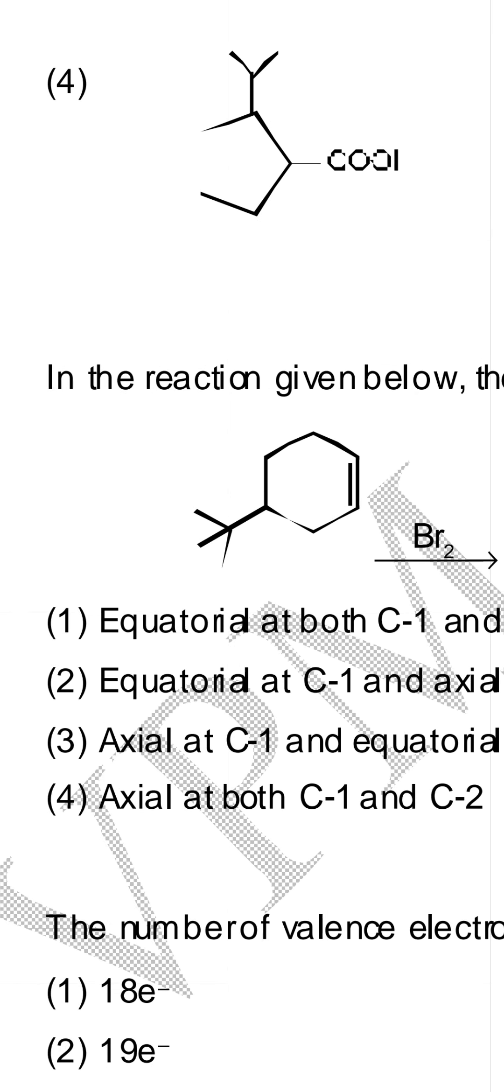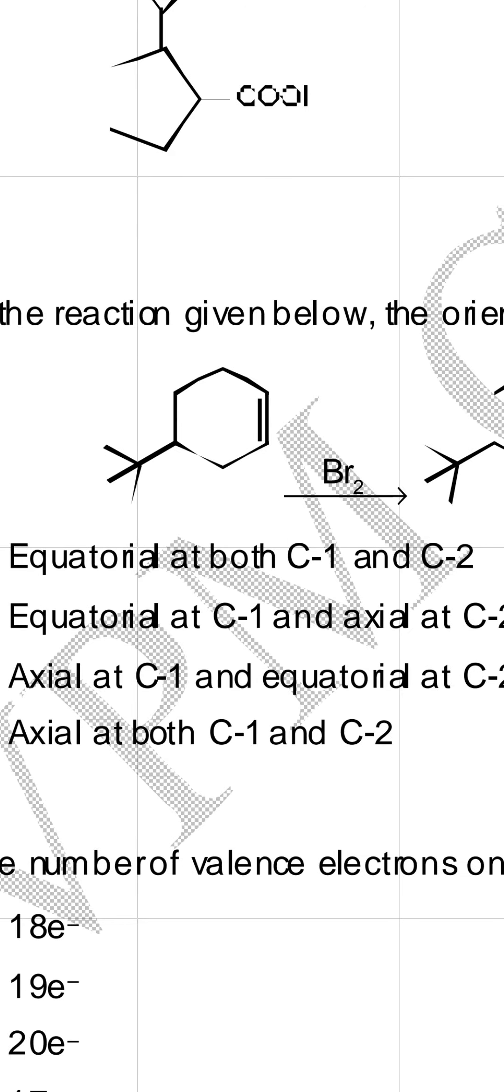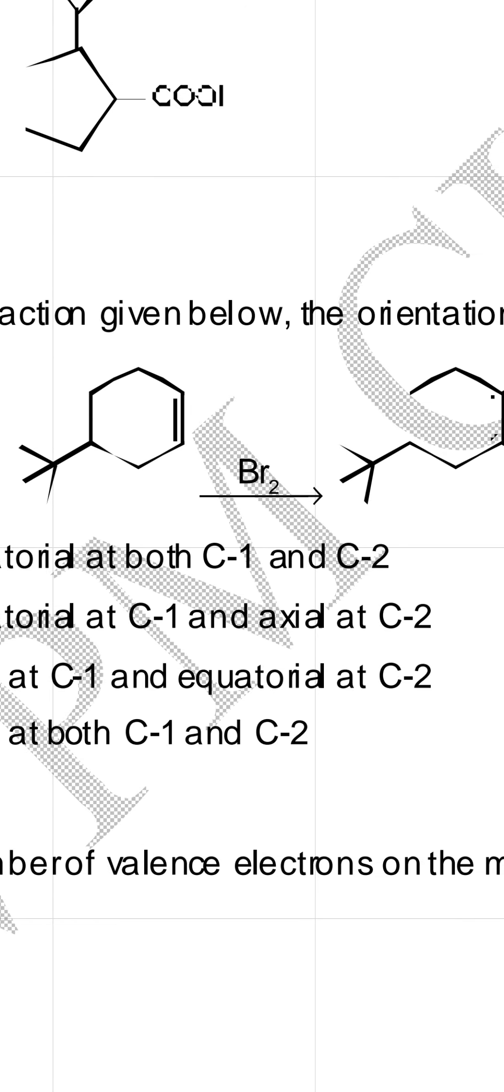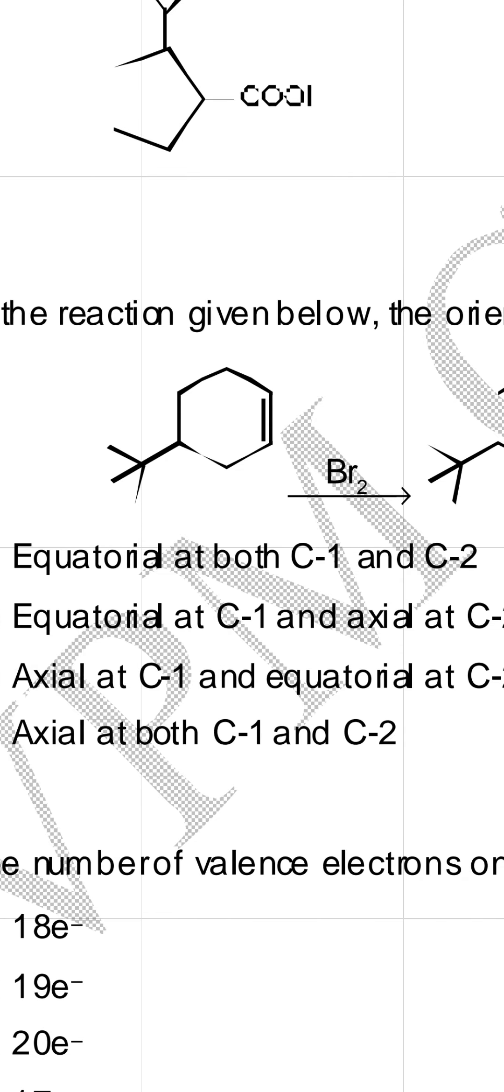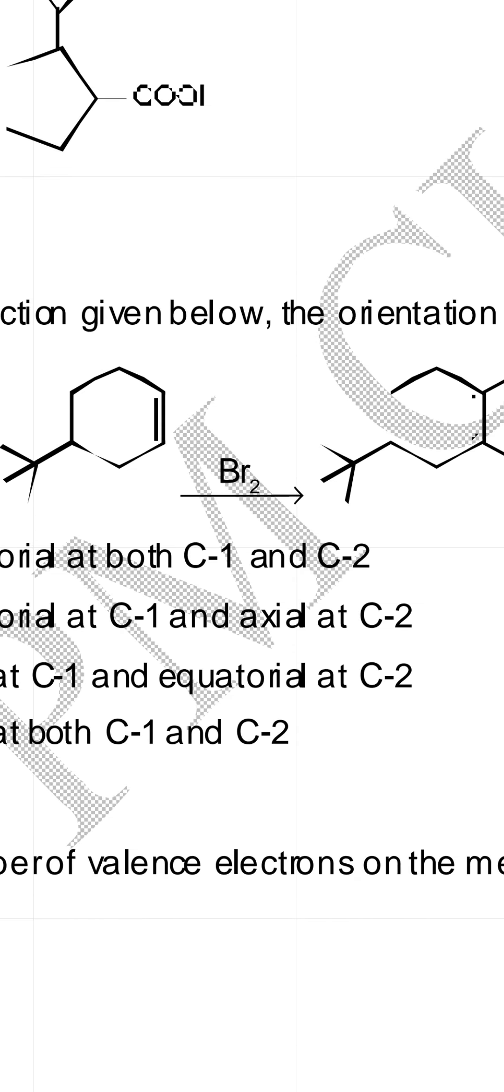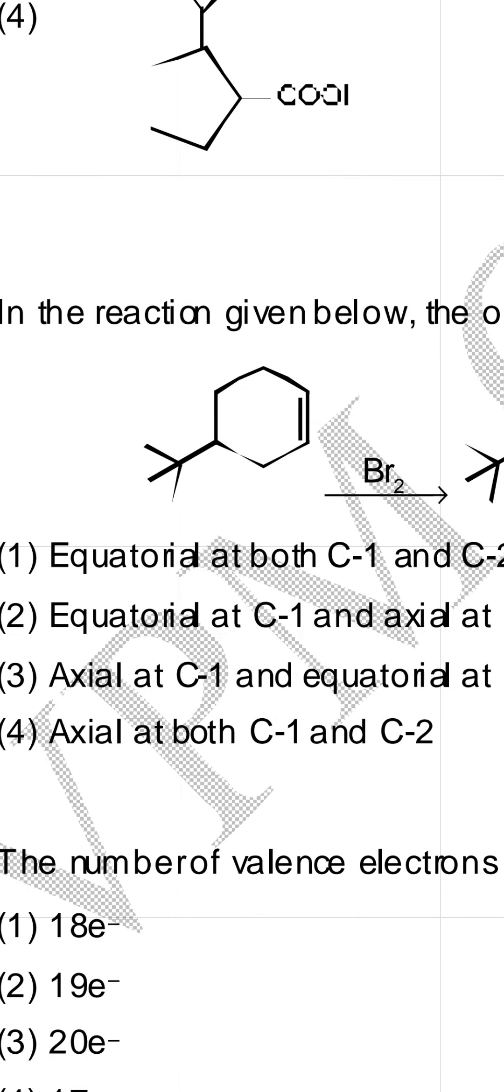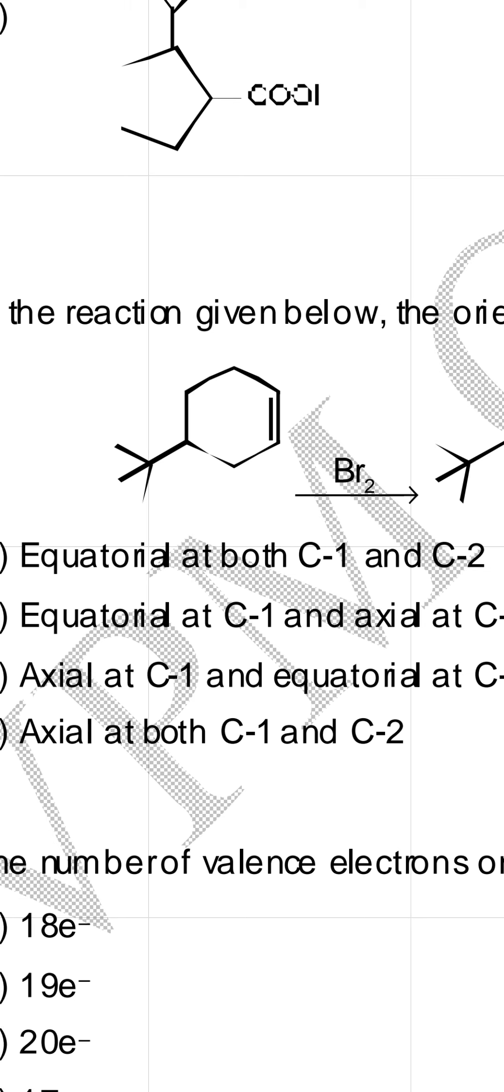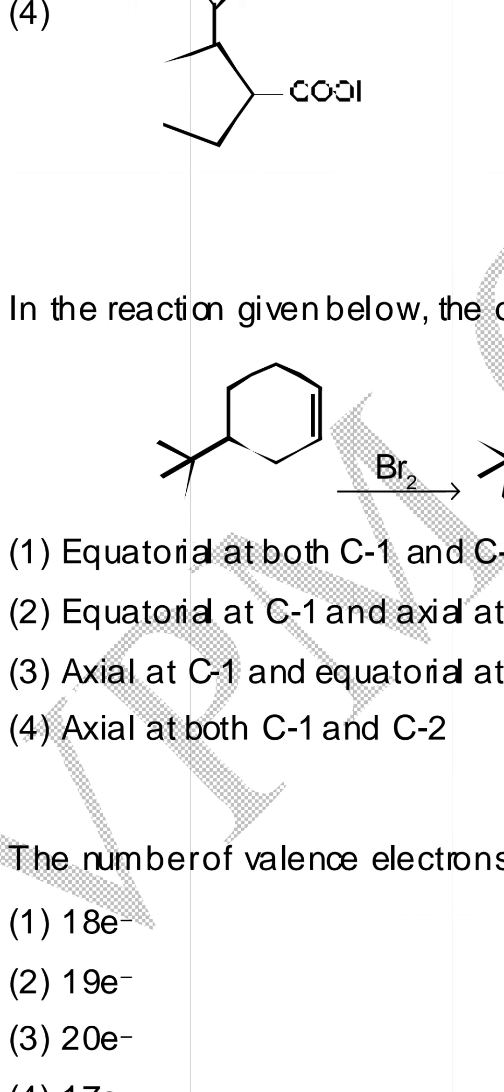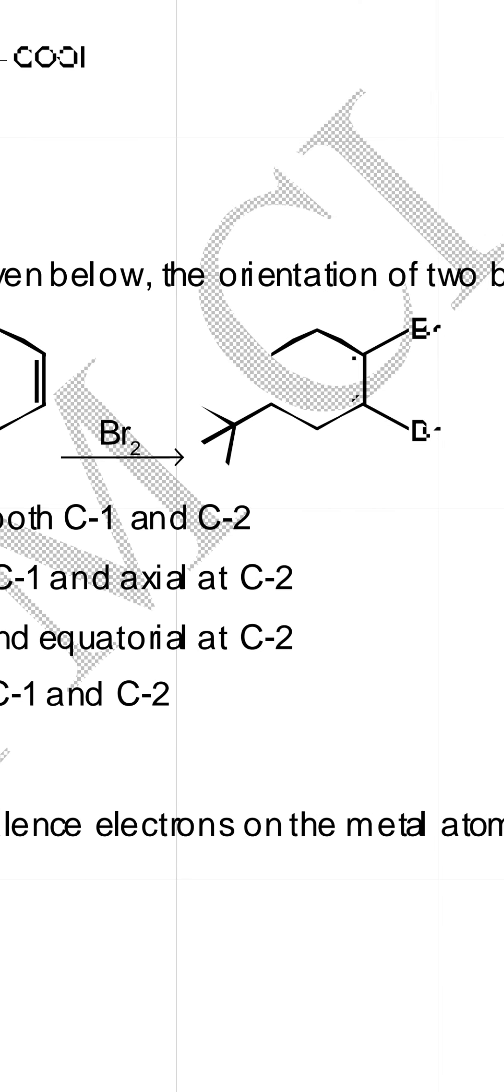So, here you can see the options: equatorial at both C-1 and C-2; equatorial at C-1 and axial at C-2; axial at C-1 and equatorial at C-2; axial at both C-1 and C-2.